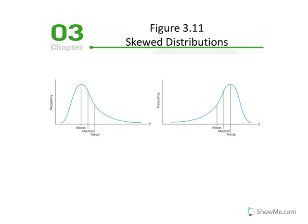When working with a skewed distribution, the location of the mean, median, and mode can be understood in terms of whether each is greater or less than the others. In a positively skewed distribution, the mean will be greater — numerically speaking — than the median, and the median will be greater than the mode. The x distribution runs from zero at the left, increasing to the right. So the mean is a larger value than the median and the mode.